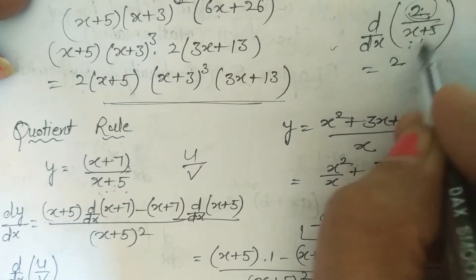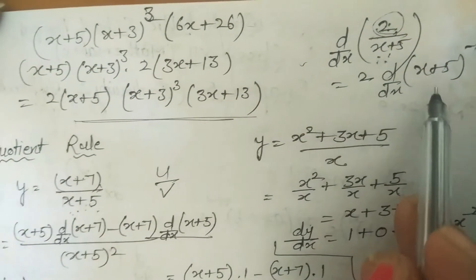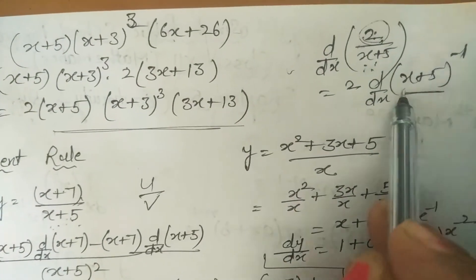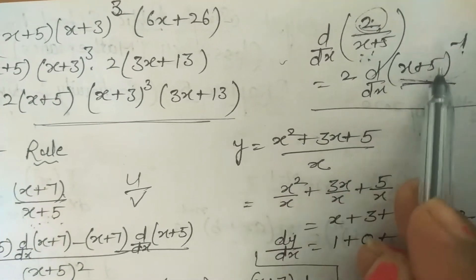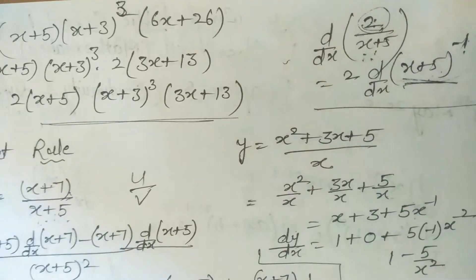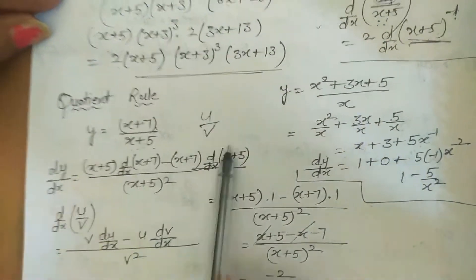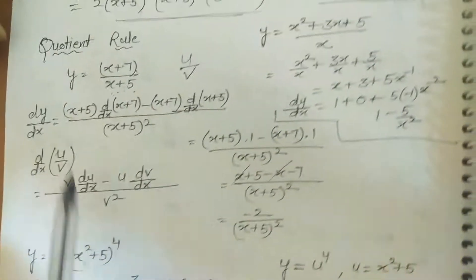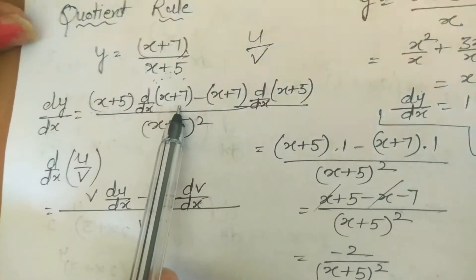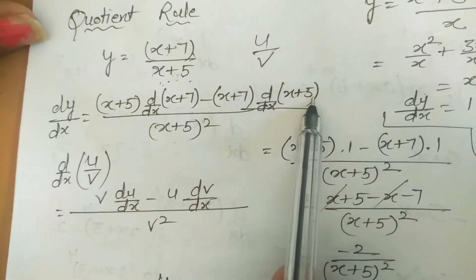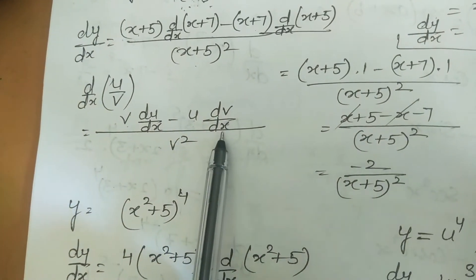The u/v rule (quotient rule): [v·d(u)/dx − u·d(v)/dx] / v². Here u = x+7, v = x+5. So: [(x+5)·d(x+7)/dx − (x+7)·d(x+5)/dx] / (x+5)².